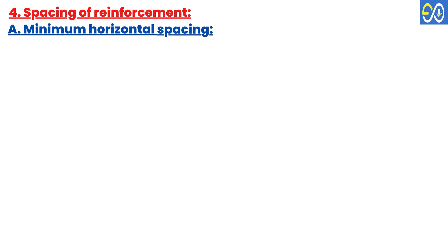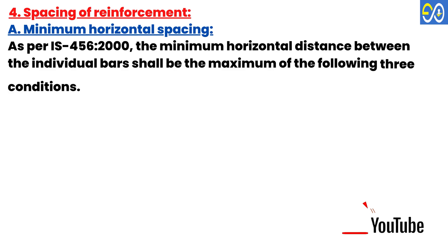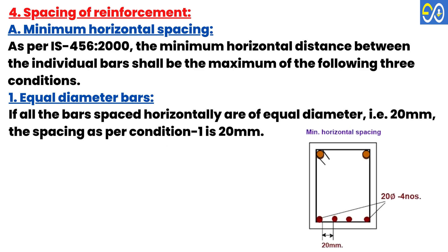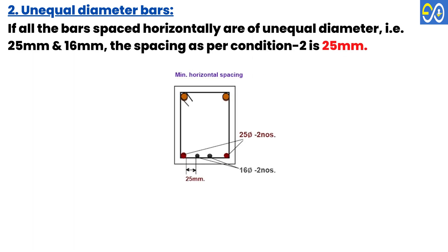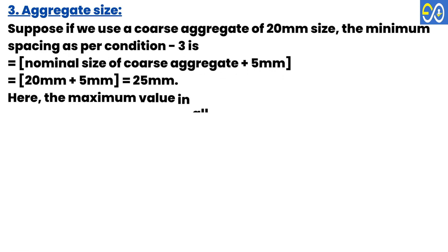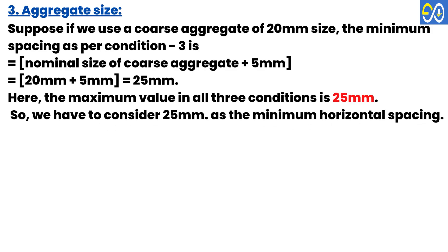Spacing of Reinforcement — Minimum Horizontal Spacing: As per IS 456-2000, the minimum horizontal distance between individual bars shall be the maximum of three conditions: (1) Equal diameter bars — if all bars are equal diameter, e.g. 20 mm, spacing is 20 mm; (2) Unequal diameter bars — if bars are unequal, e.g. 25 mm and 16 mm, spacing is 25 mm; (3) Aggregate size — for 20 mm coarse aggregate, spacing is nominal size + 5 = 25 mm. The maximum of all three conditions is 25 mm, so 25 mm is taken as the minimum horizontal spacing.